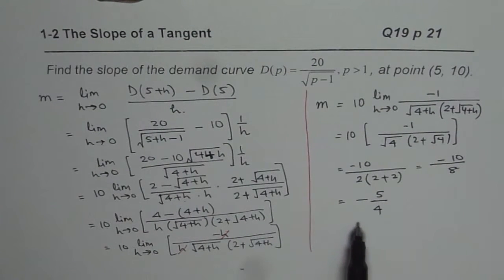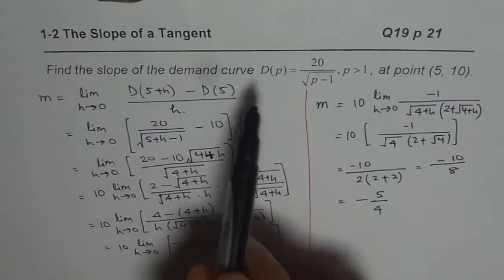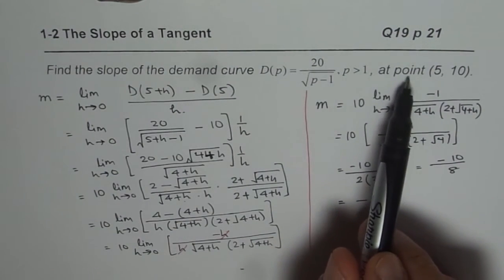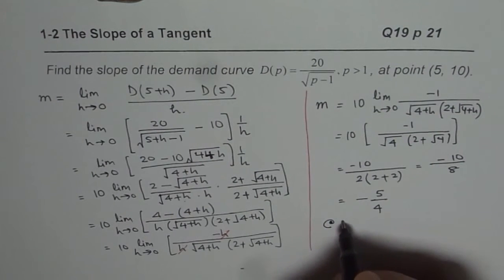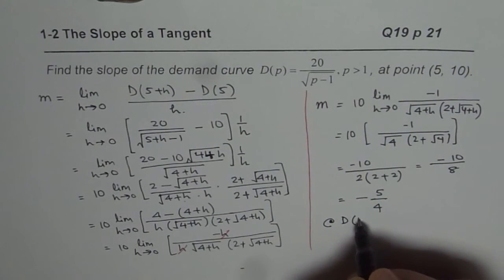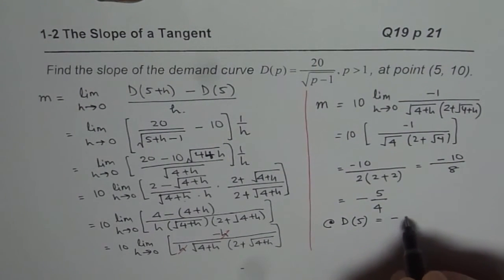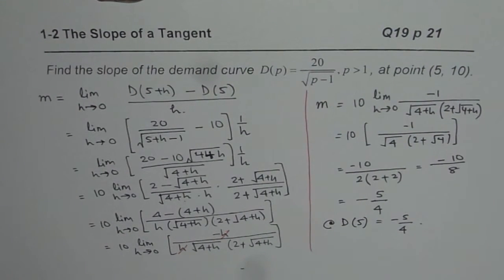So that is the answer for the slope of the demand function at the point (5, 10). The rate of change or the slope of demand function at 5 equals minus 5 over 4. That is how we could solve this question. I hope that helps. Thank you.